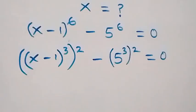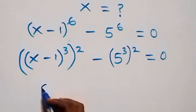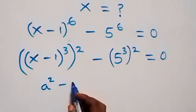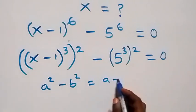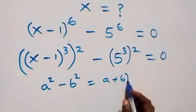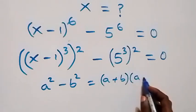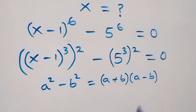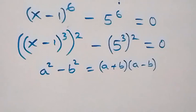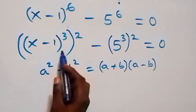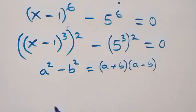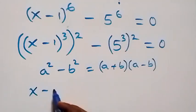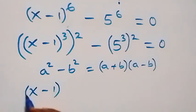From here we have difference of two squares. When we have a squared minus b squared, it's the same as a plus b into bracket a minus b. So x minus 1 raised to power 3 serves as a, and 5 raised to power 3 serves as b.